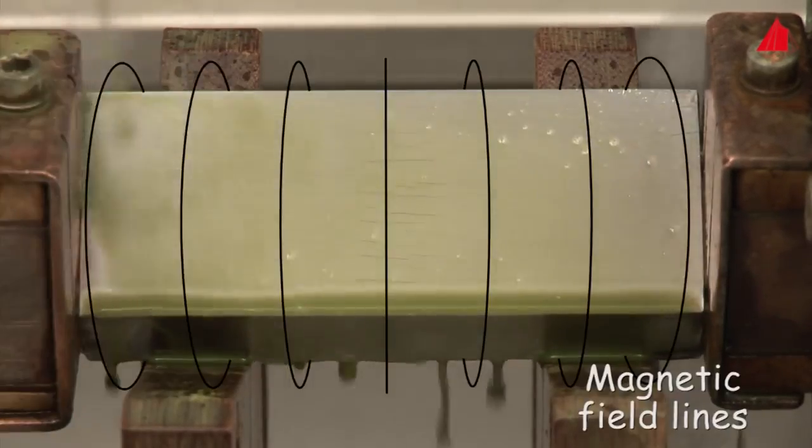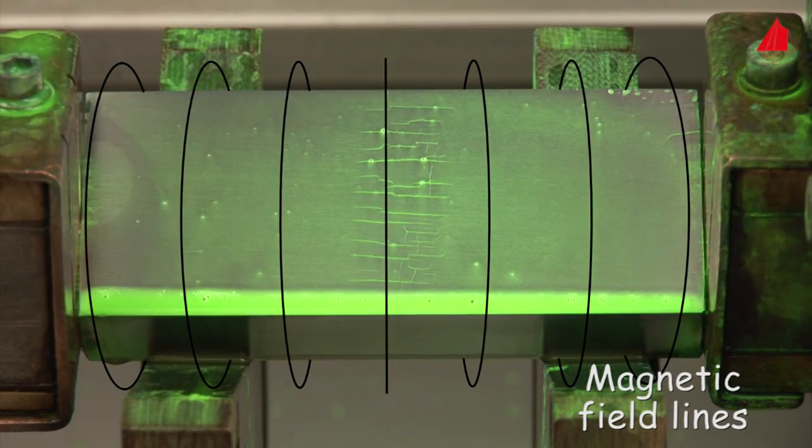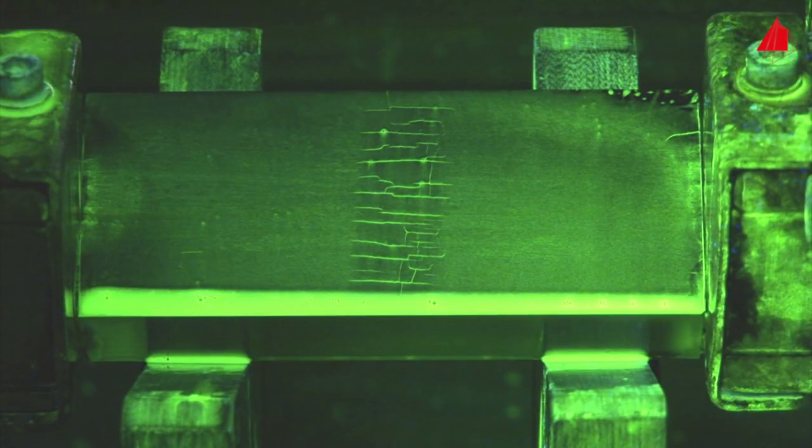Now the cracks in horizontal direction can be seen very well. The tested sample is a hardened sliding guide. The cracks have been formed during the hardening process and the subsequent grinding operation.